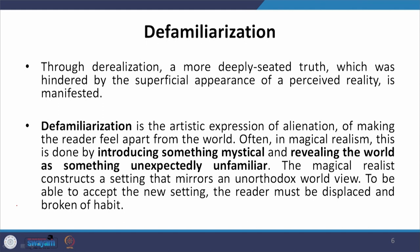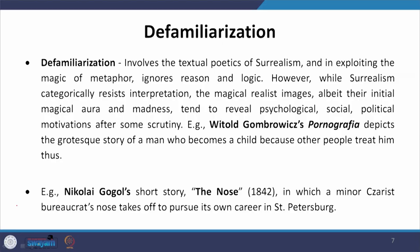The magical realist constructs a setting that mirrors an unorthodox worldview. To be able to accept this new setting, the reader must be displaced and broken of habit. This is also something that E.M. Forster is saying about the resilience of the reader — how far are we ready to travel with fantasy, with fantastic writing and fantastic meanings? If we are too much rooted to our ordinariness with our jaded vision, then that would not be possible. The alternate world and our ability to believe it is frustrated when we are too much rooted in our ordinariness.